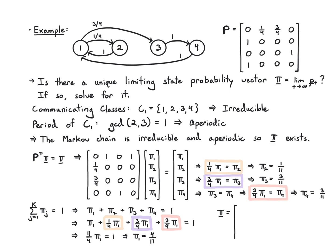So the pi vector is (pi_1, pi_2, pi_3, pi_4) = (4/11, 1/11, 3/11, 3/11).